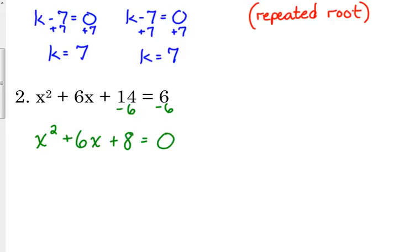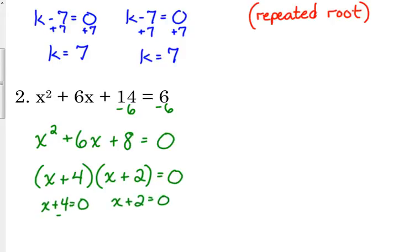Now, we're still in a pretty simple case of factoring here. 4 times 2 is 8. 2 plus 4 is 6. So this is (x+4) and (x+2). We set each of those equal to 0. Bless you. And we solve them for x. Subtract 4 from both sides. So we get negative 4. Subtract 2 from both sides. And we get negative 2.